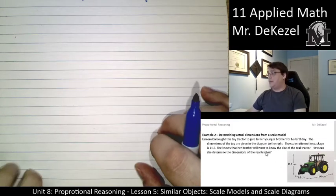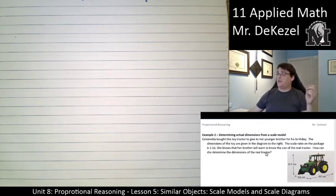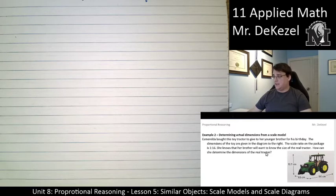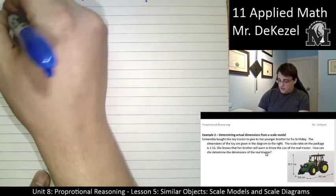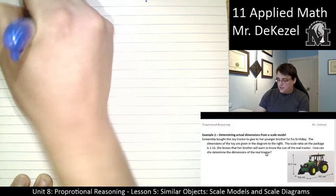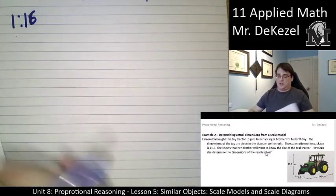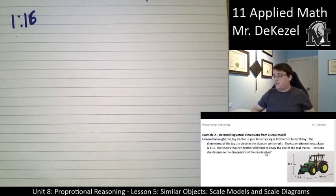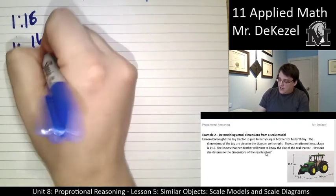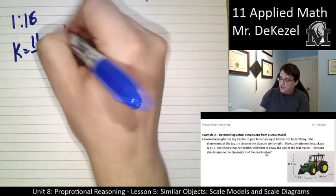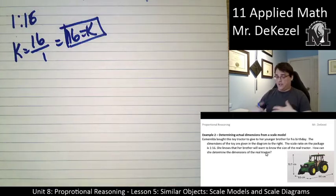In this problem, we're going to determine the actual dimensions from a scale model. Esmeralda bought this toy tractor to give to her younger brother for his birthday. The dimensions of the toy are given in the diagram. The scale ratio in the package is 1 to 16. She knows that her brother will want to know the size of the real tractor. We've got a ratio of 1 to 16. That means we are going to be scaling up. So we are going to be having K is 16 divided by 1, or K equals 16.